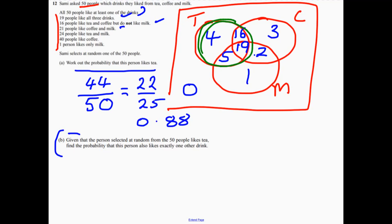It means that the person that you're selecting, you know before you do anything at all, you know they like tea. So they belong in that tea circle.